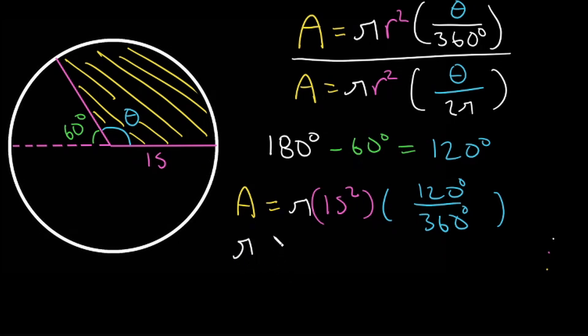We'll have pi times 15 squared, 15 squared if we put it into our calculator that is 225, so 225 and then we multiply by 120 divided by 360. We don't need a calculator for this we can just cancel the zeros and we see 12 over 36. 12 and 36 are both divisible by 12 and if we do that we will get 1 third.